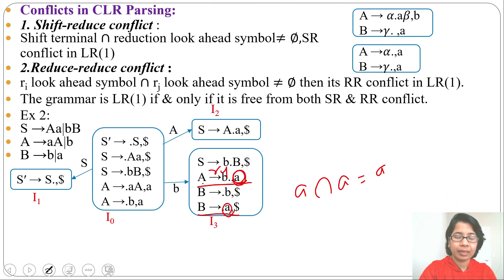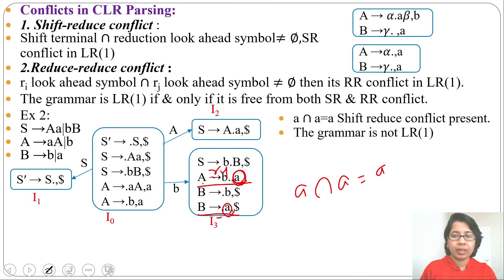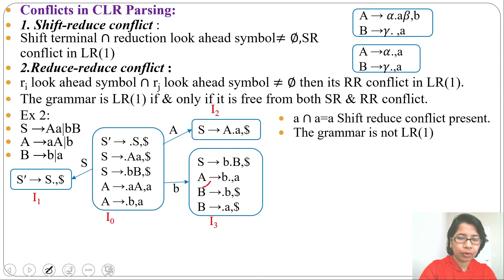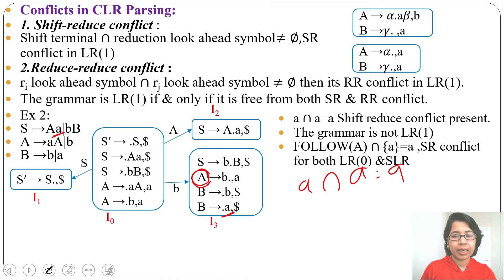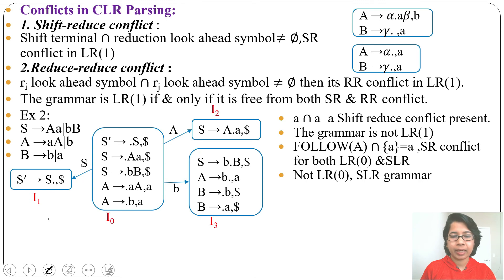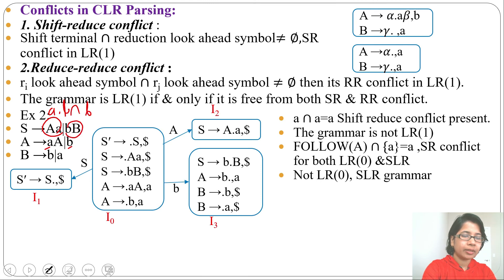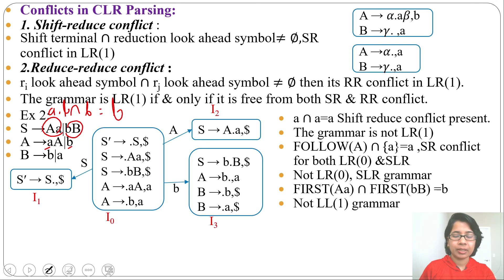At i3 for terminal 'a', we write both a reduction and a shift, so there is a shift-reduce conflict. The grammar is not CLR1. To check if it is SLR1, find FOLLOW(A) — FOLLOW(A) = {a}, and the shift is also on 'a', so the intersection is 'a', not φ. There is an SR conflict for SLR1 as well. For LL1, FIRST(aA) = {a, b} and FIRST(b) = {b}, and their intersection contains 'b', which is not equal to φ, so this is not LL1 either.